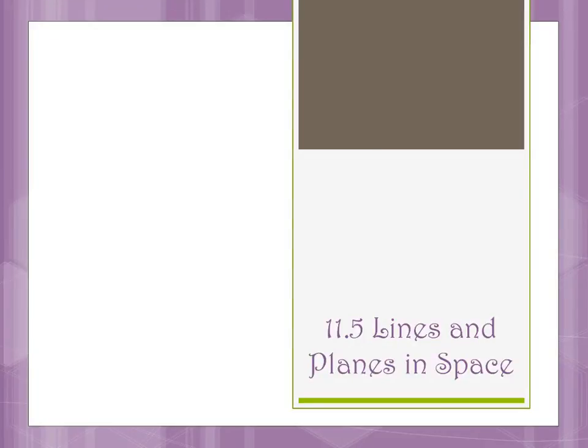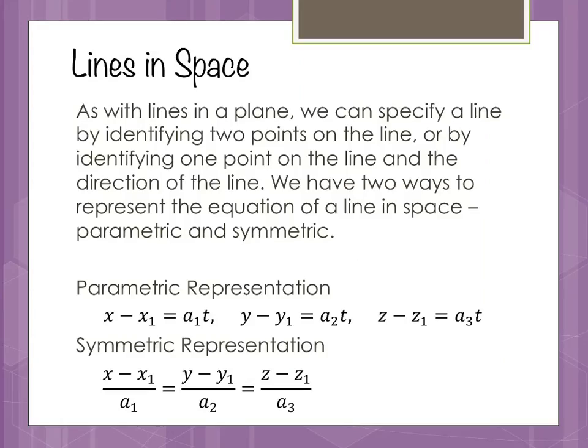Section 11.5 is called Lines and Planes in Space, and we're going to start with the lines component of it. Lines in space, as with lines in a plane, we can specify a line by identifying two points on the line, or by identifying one point on the line and the slope. In three dimensions, this corresponds to identifying one point and a direction of the line. We have two ways to represent the equations of a line in space: parametric and symmetric.